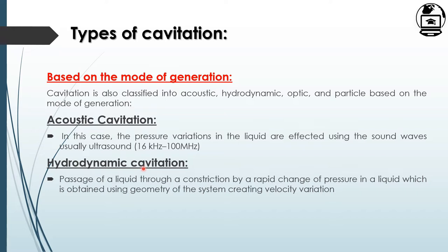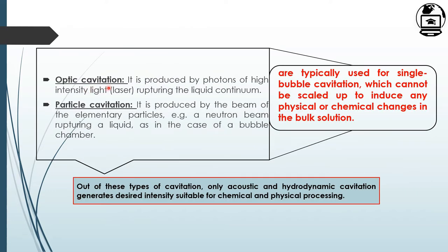Hydrodynamic cavitation produces cavities by the passage of liquid through a constriction via rapid change of pressure, which is obtained by using the geometry of the system that creates velocity variation. Optic cavitation produces cavities by photons of high intensity light that rupture the liquid continuum. Particle cavitation produces cavities by a beam of elementary particles, such as a neutron beam, used in bubble chambers. Optic and particle cavitation are used only for single bubble cavitation and cannot be scaled up to induce physical or chemical changes in the bulk solution.